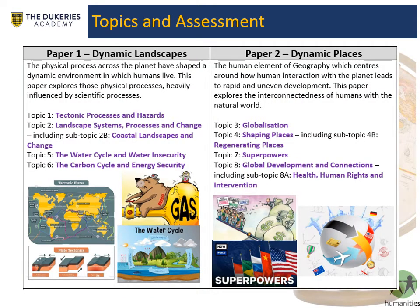Papers one and two are your core papers containing the topic content. The first topic is hazards — very similar to GCSE but in more depth. You'll look at seismic waves in terms of earthquakes, which you perhaps wouldn't have covered at GCSE. Topic two is landscape systems, processing and change — about how the landscape around us works, and you'll study coasts. Topic five is the water cycle, focused on water insecurity — why some places have more water than others and what that insecurity leads to, such as water wars. Topic six covers the carbon cycle and energy insecurity — a major issue for the future in terms of ensuring energy security as a country.